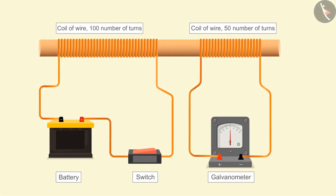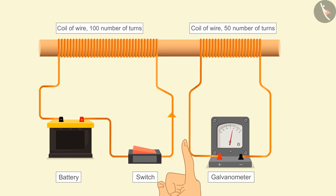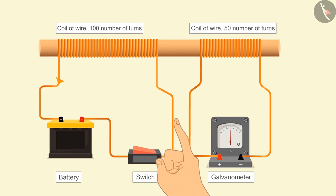Here, replace the magnet with another current carrying coil having 100 number of turns. We can hold the two coils with the help of a hollow cylinder of cardboard. When we put on the switch after connecting coil 1 with the battery, then a momentary deflection can be seen in the needle of the galvanometer in one direction, and the needle jumps back to zero quickly.